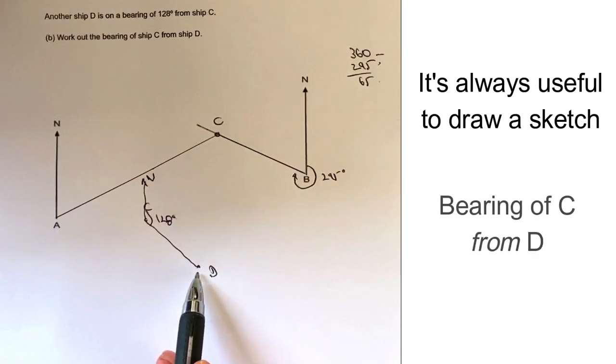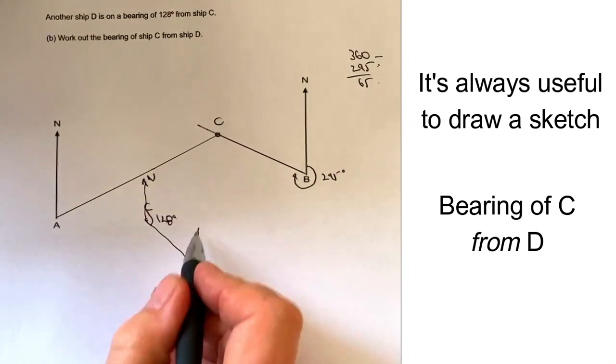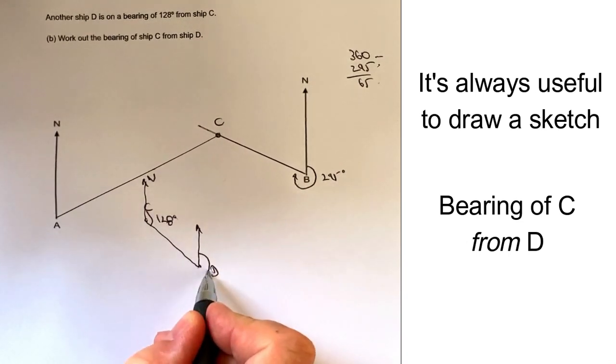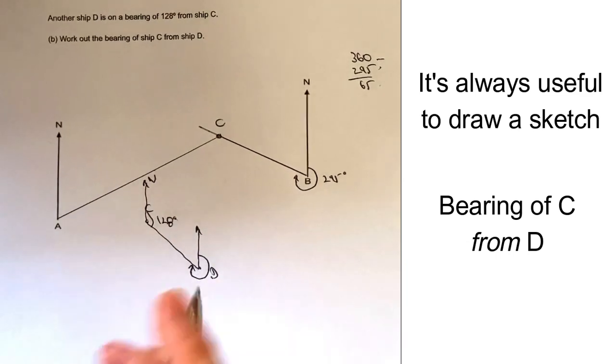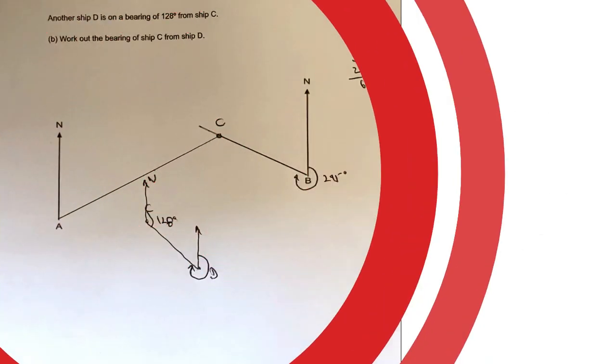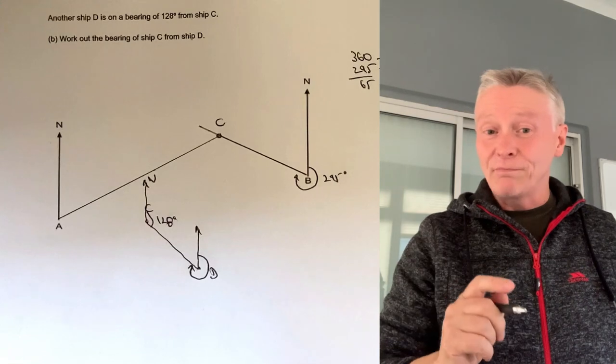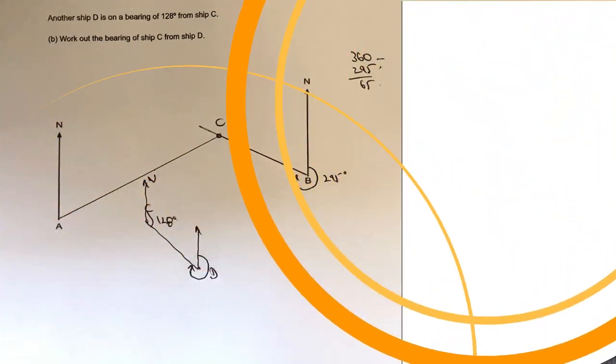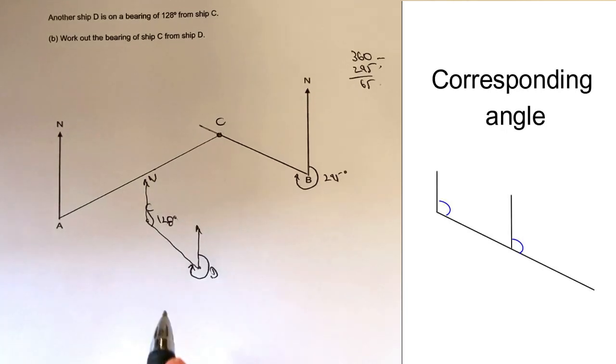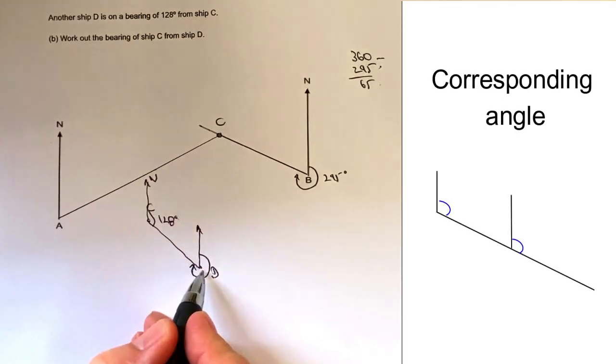In other words, a similar situation is that they want us to calculate this reflex angle. The easiest way of doing that is to use corresponding angles. Corresponding angles is where you've got an angle which is like an F shape.